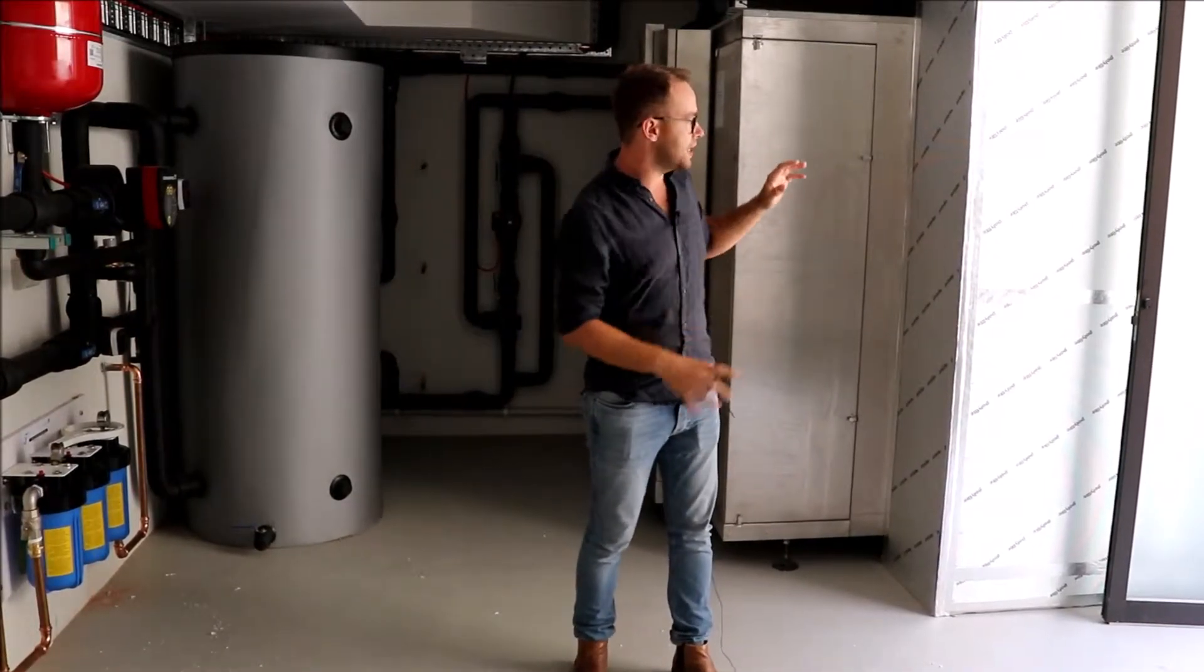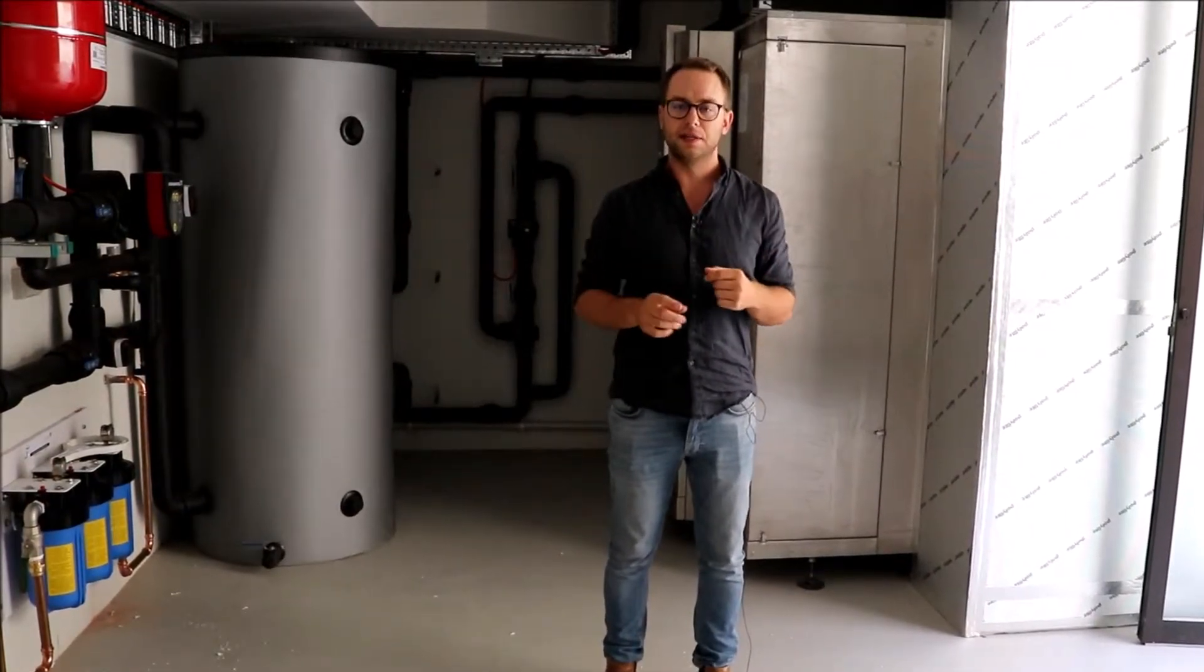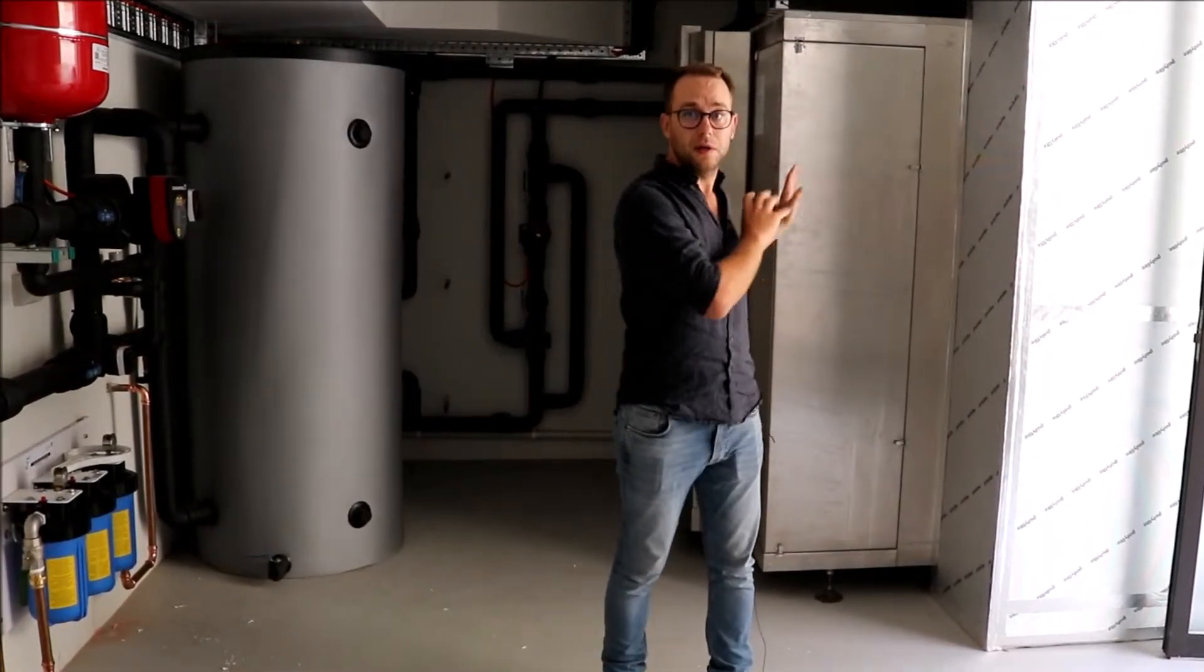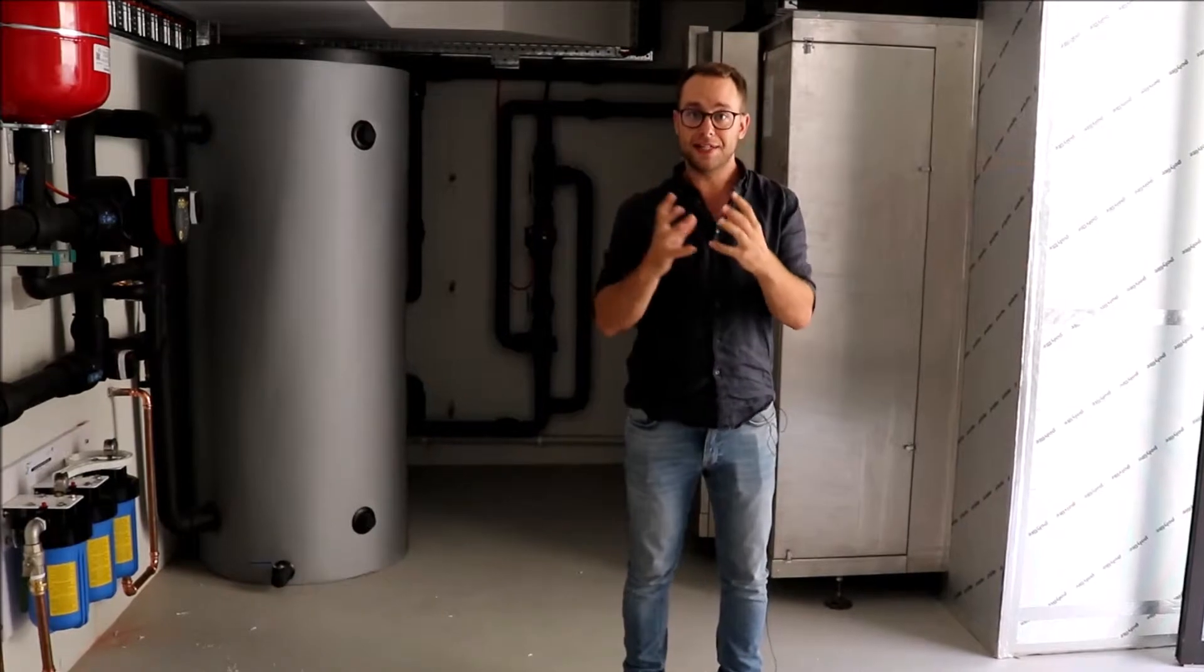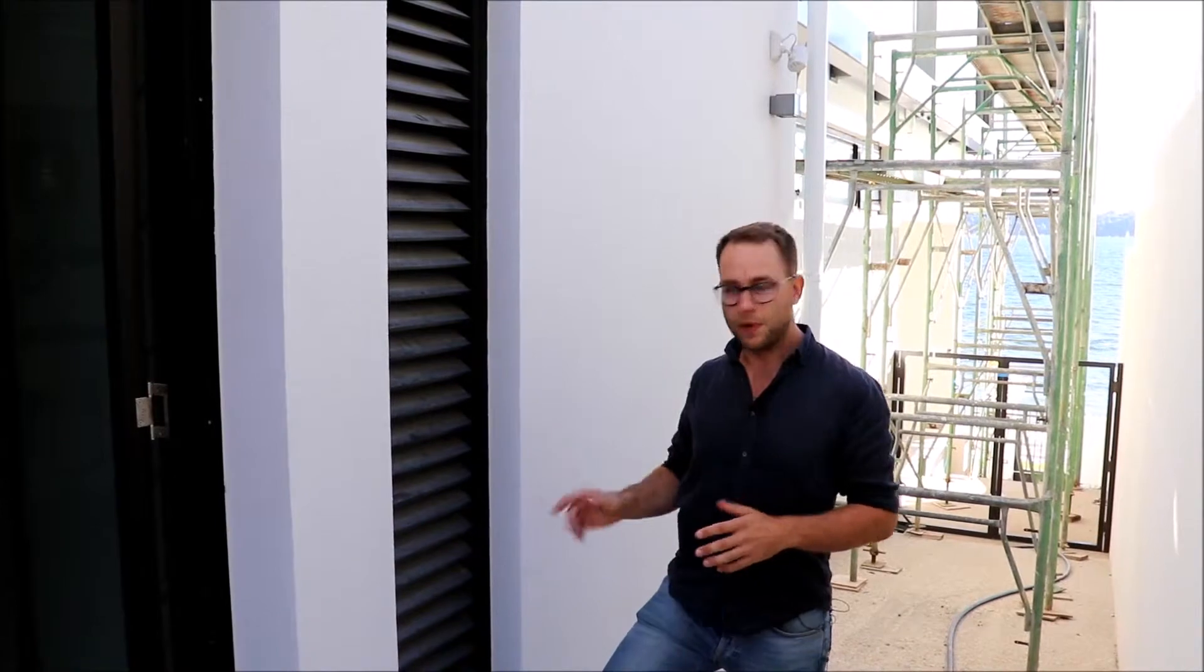And so what we have here is we actually have an air to water heat pump installed inside a plant room. But the trick is that it's a ducted heat pump. So we have on one side of the heat pump the air intake and on the other side we have the exhaust air.